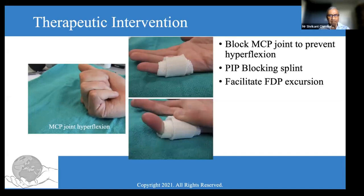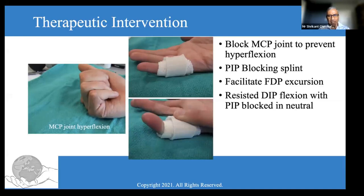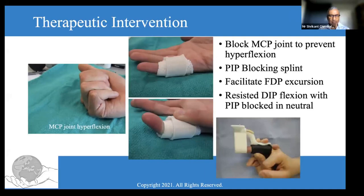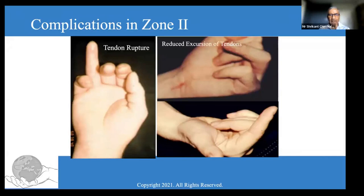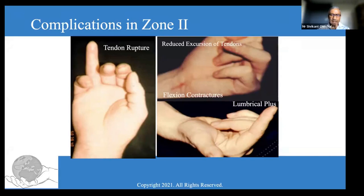If the profundus has lost gliding amplitude, we can still gain some excursion by providing patients with a PIP joint blocking splint to facilitate FDP excursion. As patients gain motion, we can use electrical stimulation and encourage controlled resisted motion when the PIP joint is held in neutral. In Zone 2, tendon ruptures are relatively less common nowadays because of our understanding of tendon biomechanics. However, if patients are not wearing a splint, they are likely to rupture their tendon. The most common complication is reduced excursion of FDS and FDP in a fibrotic sheet, and patients may also have associated flexion contractures. Lumbrical plus is seen especially when both tendons have scarred down to the fibrotic sheet distal to the MCP joint.